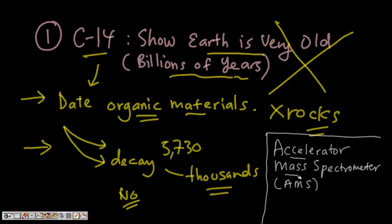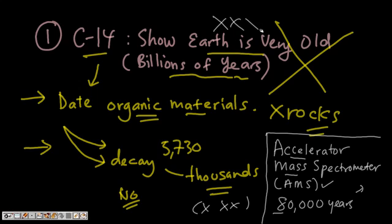In fact, the accelerator mass spectrometer (AMS) has an assumed accuracy of measuring only up to 80,000 years by measuring the ratio of carbon-14 to carbon-12. So definitely not in the millions of years range. This is a misconception.